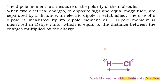Dipole moment is defined as the product of the magnitude of one of the charges and the distance separating them. If we consider HCl as an example, chlorine is more electronegative than hydrogen, so it attracts the shared pair of electrons towards its side. As a result, the chlorine atom has a partial negative charge and the hydrogen atom has a partial positive charge. Multiplying the magnitude of this charge with the distance separating the dipole gives the dipole moment.